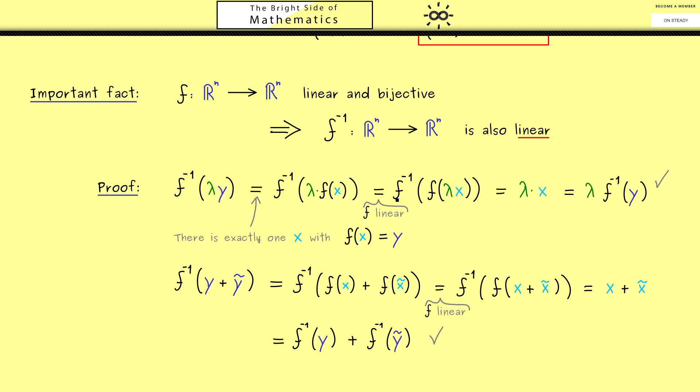Okay, and there you see, this is an important fact to remember because it helps you a lot. It tells you if you have the linearity, you never have to check for the linearity of the inverse map. It's simply always given.